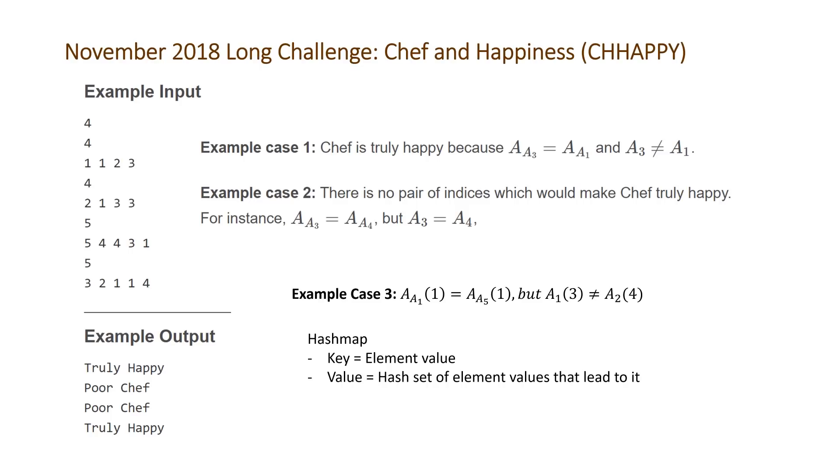The way we're going to solve this is using a hash map where the key is the value of an element. And the value of our hash map is going to be a hash set of element values that lead to it. In the example of our last case, we're basically going to end up with a hash map and the element value that is going to have a hash set with a size greater than one will be the key of one. So basically, we'll have a key of one and then the hash set that is the value attached to that key is going to contain all of the element values that can lead to that. So we'll end up with a hash set of the values three and four. So as long as you in your hash map have at least one key value pair, where the hash set has a size that's greater than one, that means that you can find basically four elements that satisfy this requirement.